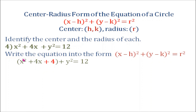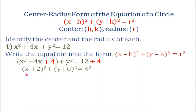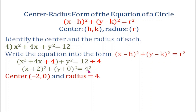We add 4 inside the parentheses, and since we added 4 on the left side we also add 4 on the right side. The expression x squared plus 4x plus 4 can be written as the quantity x plus 2 squared. Then y squared can be written as the quantity y plus 0 squared, and 12 plus 4 is 16, which can be written as 4 squared. So the coordinates of our center are negative 2 and 0, and the radius is 4.